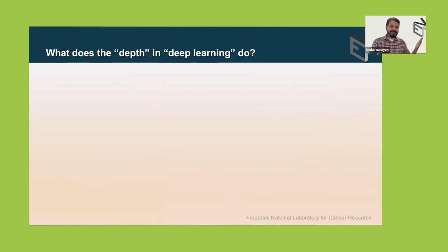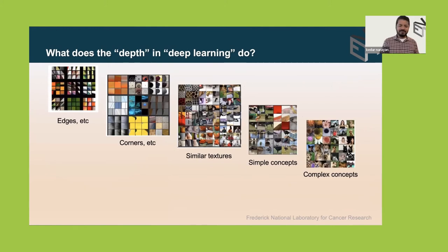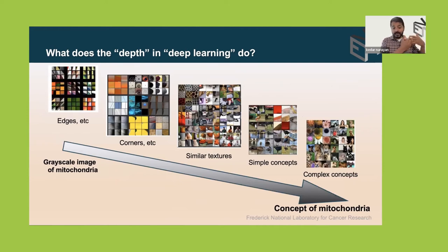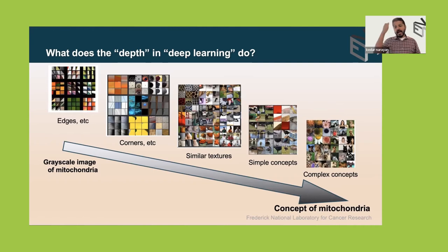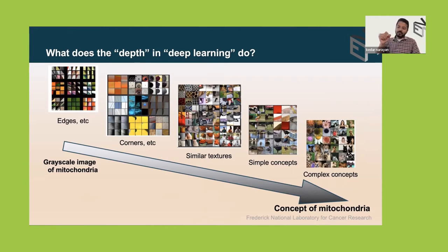What does deep learning really do? You take a grayscale input image of a mitochondrion against a cellular ultrastructure background. Through successive layers the model goes from simple features in the imaging plane to more and more complex concepts, until it arrives at a concept of 'mitochondrion' — not just edge detection at a particular spot. The model understands what a mitochondrion is, which is something humans do without thinking. That is where we want our deep learning models to be.